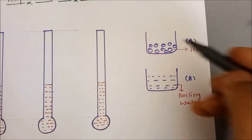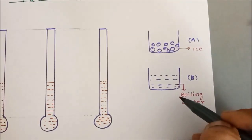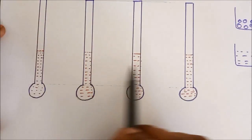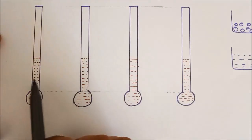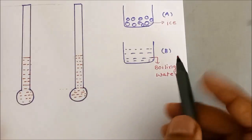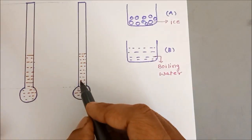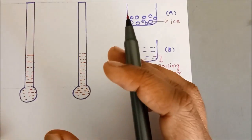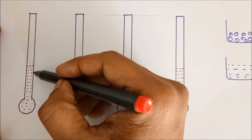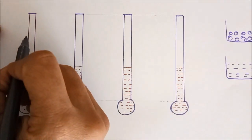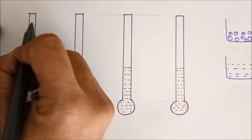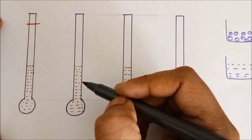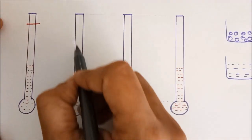Here we have another 2 containers — one having ice and the other one having boiling water. Let us keep all 4 identical glass tubes containing mercury and dip them in boiling water. The mercury is going to absorb the heat energy from the boiling water, and since the mercury becomes hot, mercury will expand. On expansion, you will see that this mercury climbs up. Since all 4 containers are having the same amount of mercury and are identical, the increase in the length will be the same in all 4.